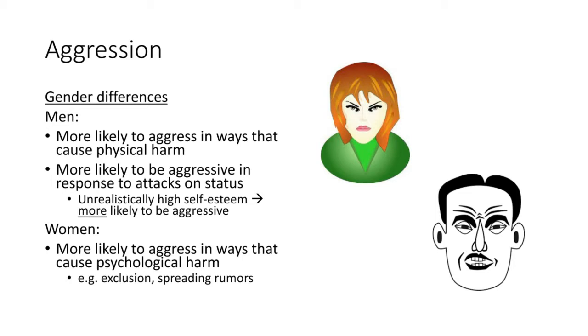It's not that women never aggress, though, but when they do, there also tend to be differences in how that aggression is manifest. So men are more likely to aggress in ways that cause physical harm, more responsive to attacks on their status. Someone with unrealistically high self-esteem is actually more likely to be aggressive, because they're more likely to perceive things like insults, as an affront to their social status. Many violent crimes, that's been cited as the reason, the motive, the trigger, some kind of contest to save face. Women are more likely to aggress in ways that cause psychological harm. So things like exclusion, spreading rumors.